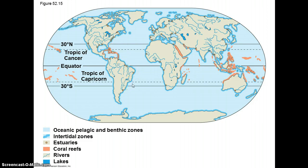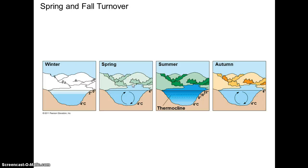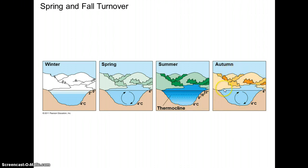Lakes are characterized by a thermally stratified water structure. In summer they're warmer at the surface and colder down deep — sunlight in the photic zone warms the water, making it less dense so it sits on top. The thermocline is the transition between the warmer and the colder water. In the fall, as it gets colder, the surface waters begin to cool and can reach a temperature at which they're basically at equilibrium throughout the lake.